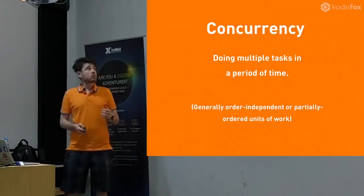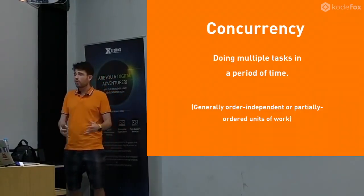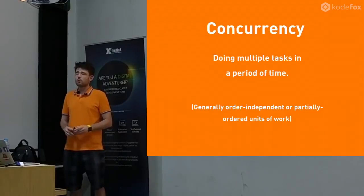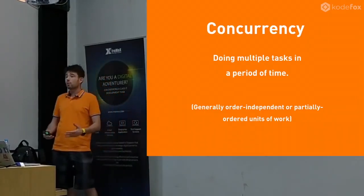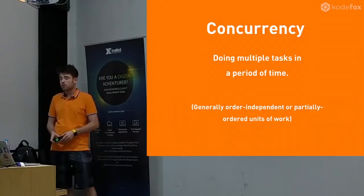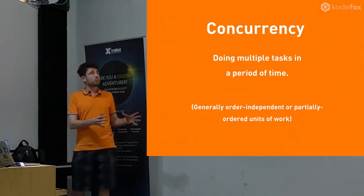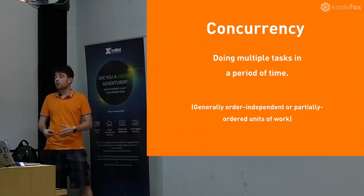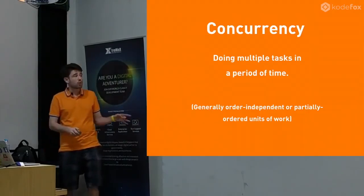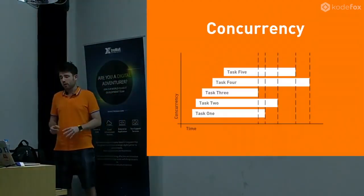Let's talk about what concurrency is. Concurrency is doing multiple tasks in a period of time. Typically one core can only do one thing at once, and other pieces of hardware can only do a single thing at a time. But over a stretch of time, we want to do multiple things. A web server wants to serve multiple requests for a web page. A script wants to read multiple values from a database before it returns the request. So we're really talking about doing multiple tasks over a period of time, and some things we can do in parallel and some things we have to do one at a time. Generally, order-independent or partially ordered units of work is where concurrency happens.